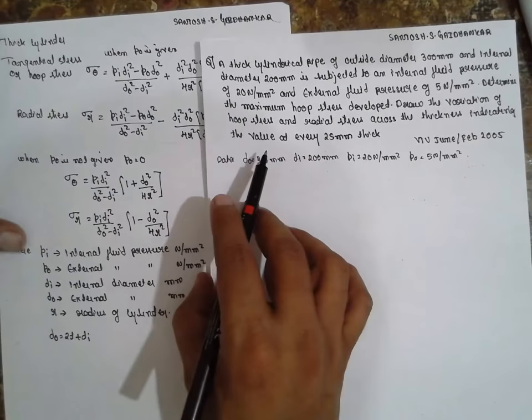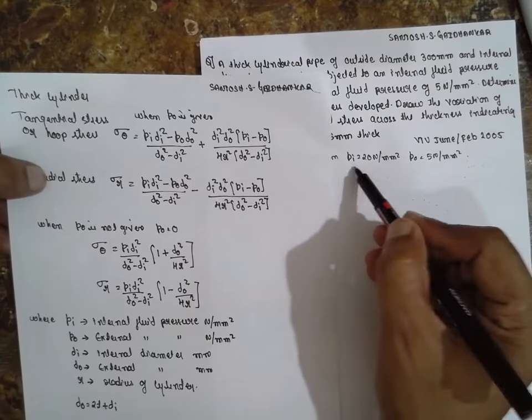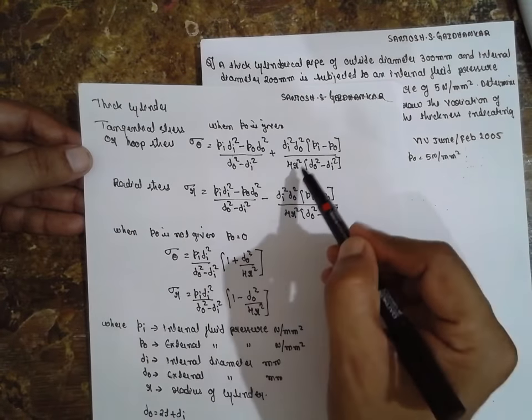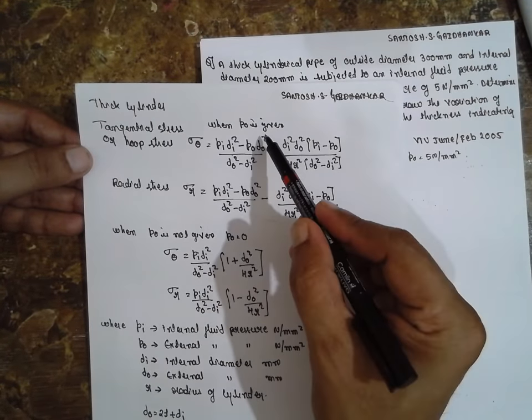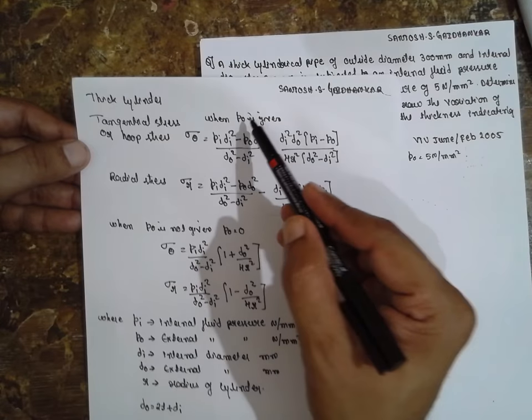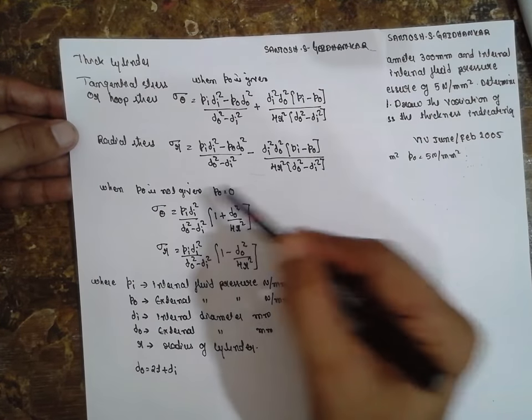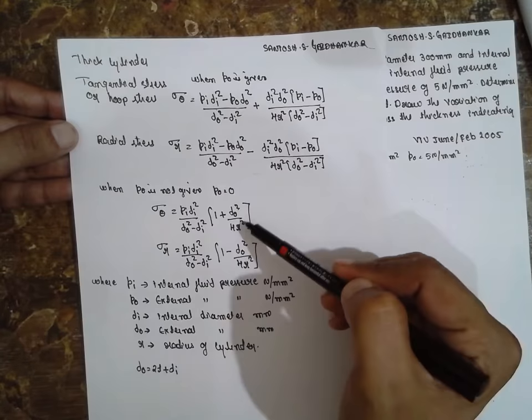This is the formulas list. Here Pᵢ and P₀ is given, therefore you have to use this formula. If P₀ is not given, then you have to use this formula. That means if you substitute P₀ equals 0, you will obtain this formula.